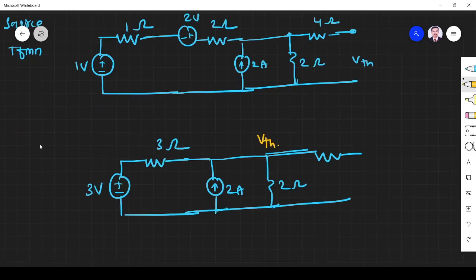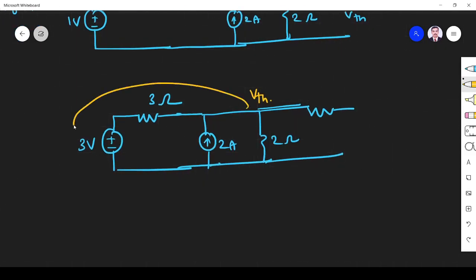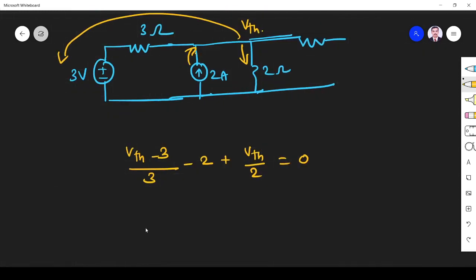Now I apply node analysis and write node equation. So first for this branch, it is Vth minus 3 divided by 3. Next this current is coming towards the node. So it is minus 2. For this branch, it is coming towards the node. Then for this branch it is Vth by 2. If you have any doubt please refer my video on node analysis where I have explained everything, how to write all the equations. So if you simplify...